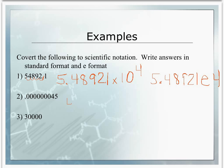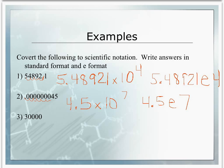In number 2, our front number will be 4.5. Then we have times 10 for the regular format and E. How many places do we move it? We move it 1, 2, 3, 4, 5, 6, 7 places, so this will be 7. Now, this is a number smaller than 1, so we need a negative in the front.